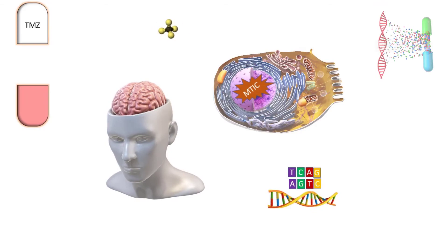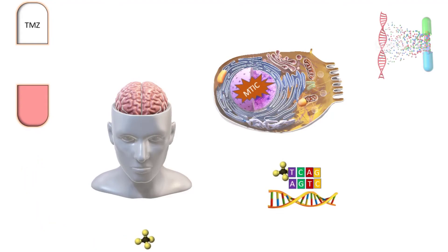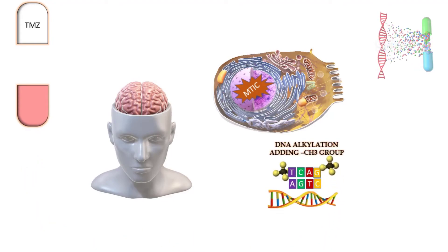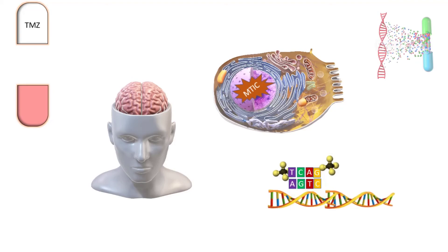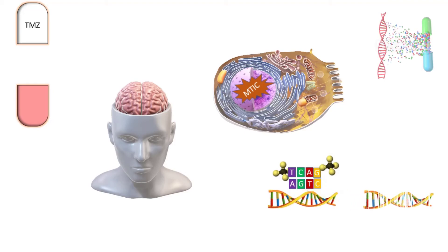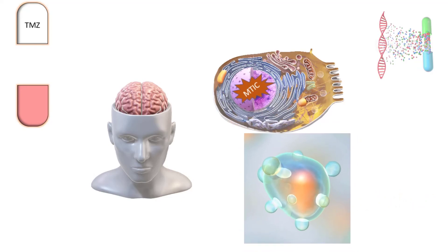MTIC enters into the tumor cell and causes alkylation of DNA bases at the thymine position and at the guanine position. This DNA alkylation leads to mismatching of DNA bases, causing nicks and cuts to the DNA, failure of the DNA mismatch repair system, and ultimately leads to cell apoptosis.